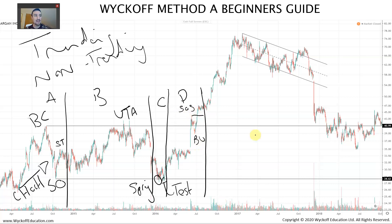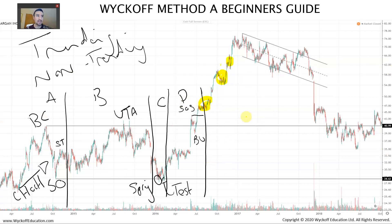That's our phase D, and what you can see then are smaller reaccumulation structures forming as we progress up. There are different ways to trade these reaccumulation structures - looking for springs, sign of strength, backing up reversal breakouts in these smaller structures. Remember they're fractal in nature so they repeat. It's our job to notice them, spot them, and enter optimal trades. I go into much greater detail on this in the courses and Wyckoff Watchlist, and there's a discount code at the end of this video.